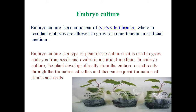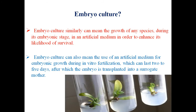Embryo culture is a component of in vitro fertilization where embryos are allowed to grow for some time in an artificial medium. It is the sterile isolation and growth of immature or mature embryo in vitro with the goal of obtaining a viable plant. It is also a type of plant tissue culture used to grow embryo from seed and ovules in a nutrient medium. The plant can develop directly from the embryo or indirectly through callus formation and subsequent shoot and root formation.